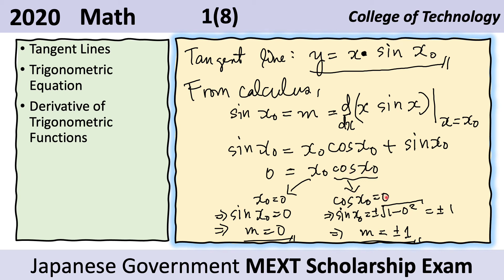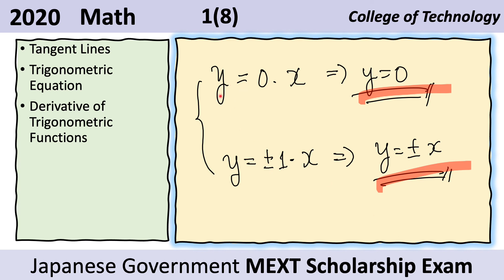For the case when cosine of x sub o equals zero, the Pythagorean identity says cosine squared of x sub o plus sine squared of x sub o equals one. Rearranging, sine of x sub o equals plus or minus the square root of one minus cosine squared of x sub o. Since cosine of x sub o is zero, this becomes plus or minus the square root of one, which is plus or minus one. So for this case the slope m equals plus or minus one. Therefore our answers are y equals zero for m equals zero, and y equals plus or minus x for m equals plus or minus one.